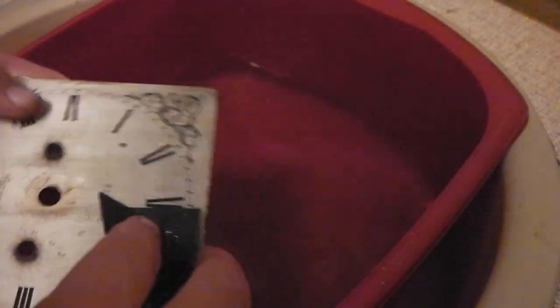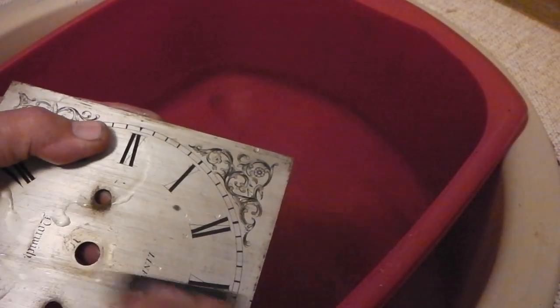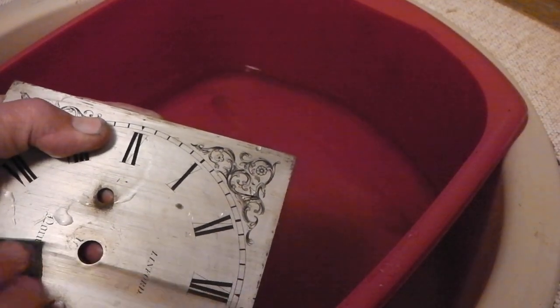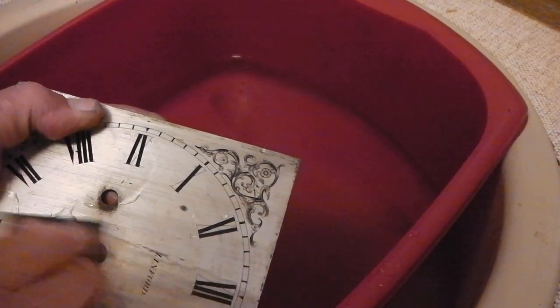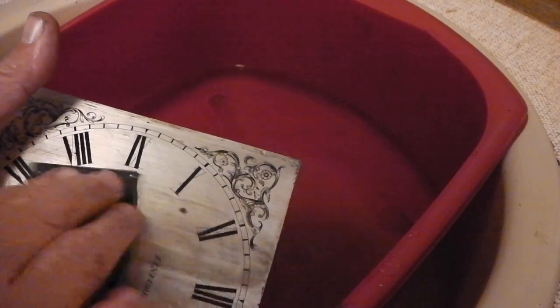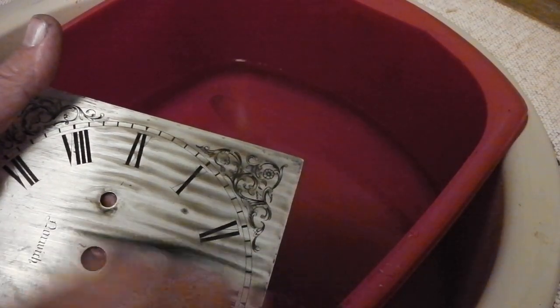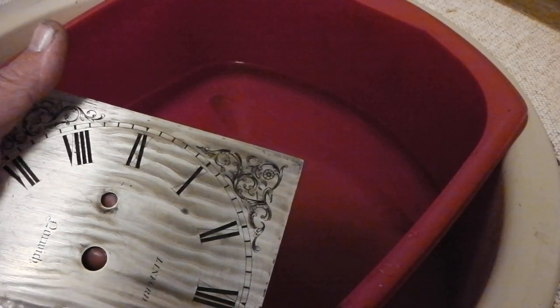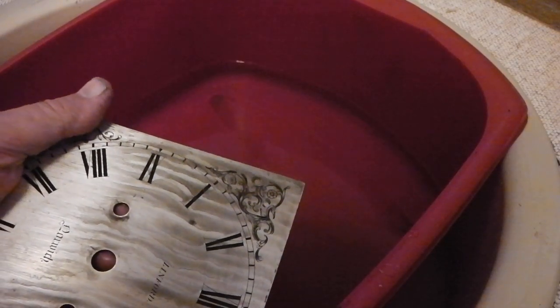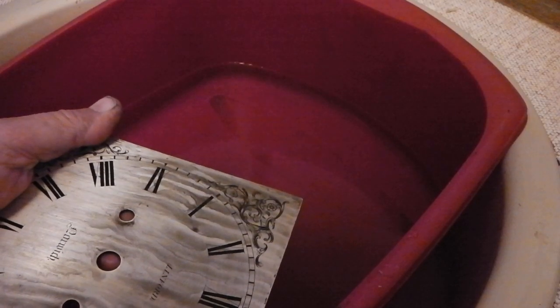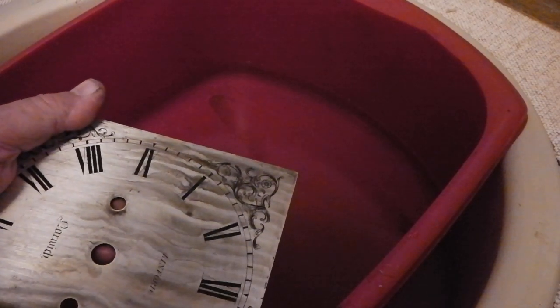First the dial silvering is cleaned off using wet and dry paper, abrasive paper. I use 400 grit. I prefer this, sometimes I use 600, but in this case as the dial has a grained finish, 400 grit will suit the purpose much better.